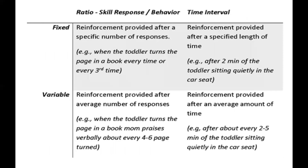These are the schedules of reinforcement based on skill, response behavior, and time interval. This table shows four types — interval schedules and variable schedules of reinforcement — and how they differ in their effect on behavior. When the timing of the response is more important, it is called an interval schedule. When the number of responses is more important, the schedule is called a ratio schedule, because a certain number of responses is required for each reinforcement.